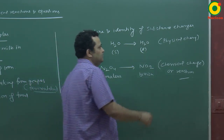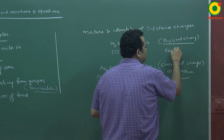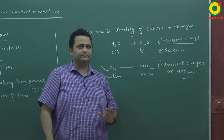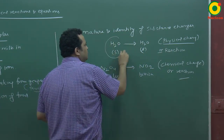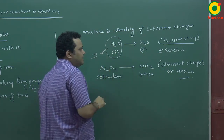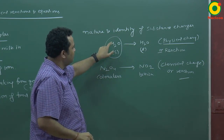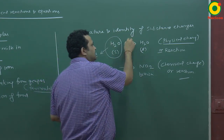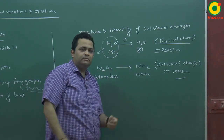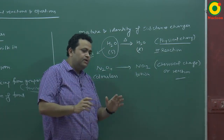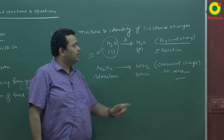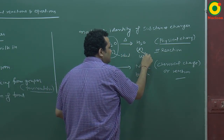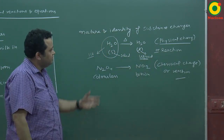If I talk about physical change, or physical reaction: a physical change is one where only the physical state is changed. For example, H2O in solid state is called ice. If we start to warm the ice — this delta sign means heating — the ice converts into H2O in liquid state. The water molecule is the same, but the physical state changed from solid to liquid. So this falls into physical reaction.